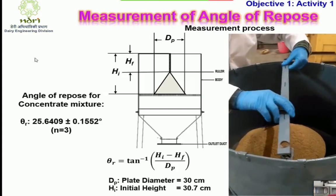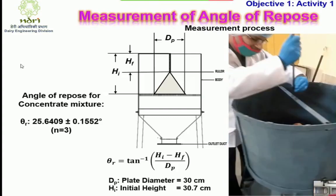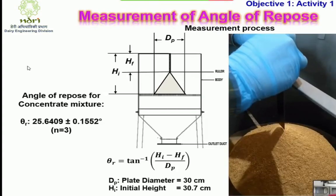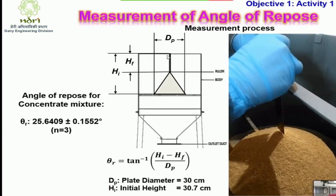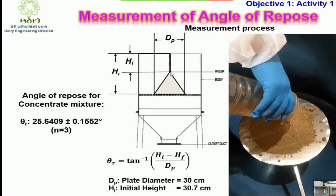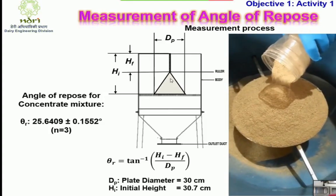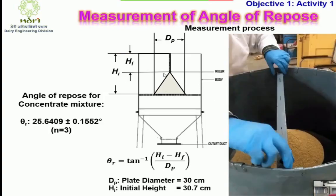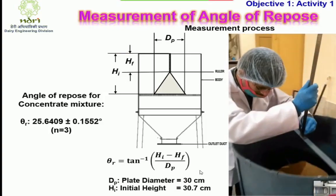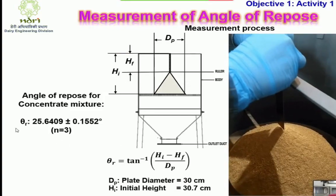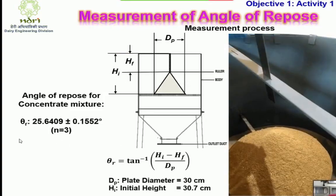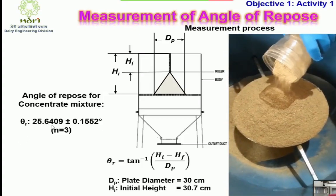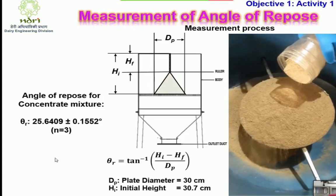Measurement of angle of repose for the concentrate feed mixture was done using the procedure where a conical heap is formed by pouring this material. By applying the relevant equation, the angle of repose of the concentrate mixture was found to be 25.64 degrees.